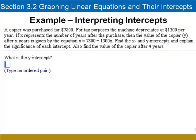We're going to go on and find the x and y-intercepts and explain the significance of each and then we'll find the value of the copier after 4 years.